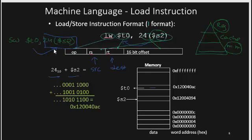The memory location is accessed through the addition of the offset and the register. In each load and store operation, the source and destination are different. The I-type format has an opcode, RS as the source, RT as the destination, and the immediate field for the offset constant.